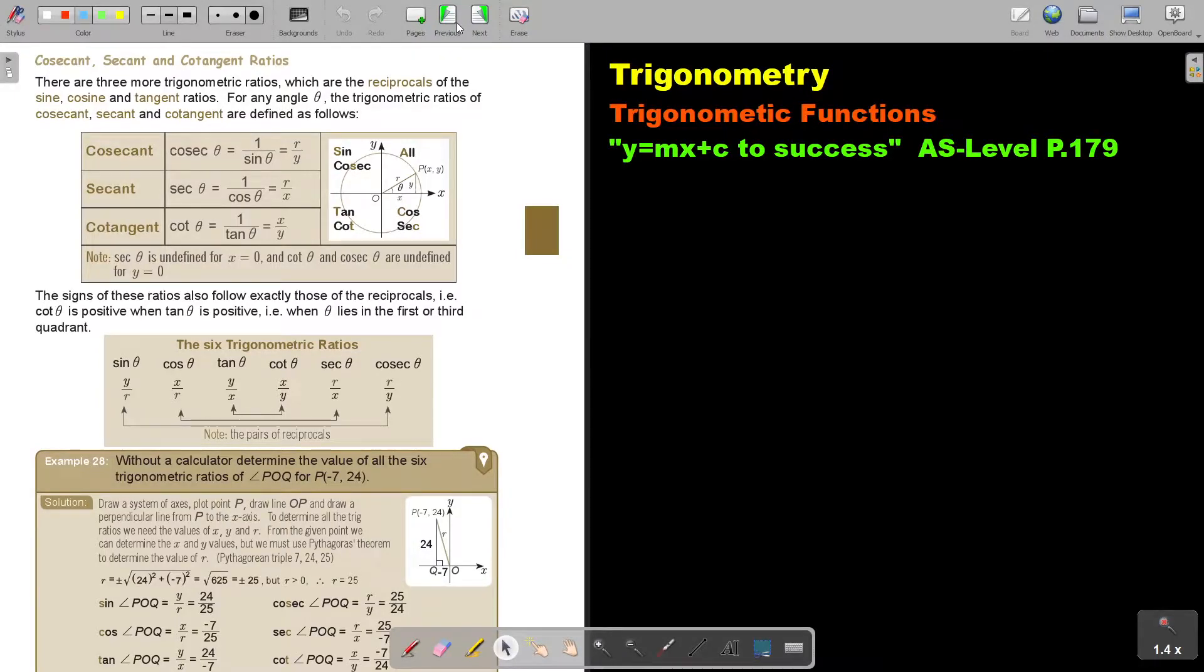In this video, we will continue with trigonometric functions. You will find this on page 179 in the Namibia AS level mathematics textbook y equals mx plus c to success. We are going to focus in this video on the three new functions, the reciprocal functions, and that is the cosecant, secant, and cotangent ratio.